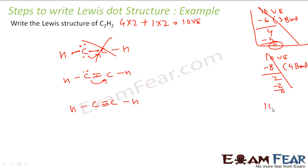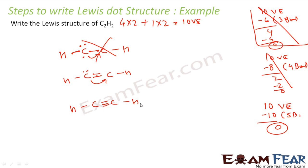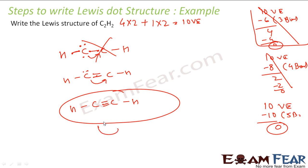Again, redraw the structure. We start with 10 valence electrons. We have 3 plus 2 — 5 bonds — that means we need 10 valence electrons for 5 bonds. So we are left with 0 valence electrons. If everybody is happy, this is my structure. This carbon has 8 electrons, this carbon has 8 electrons, this hydrogen has 2 electrons, and this hydrogen has 2 electrons — everybody is happy. Since everybody is happy, this is my structure, because all the atoms in this molecule are happy.